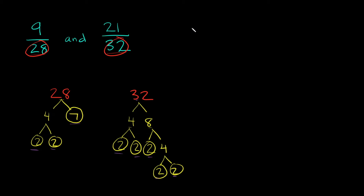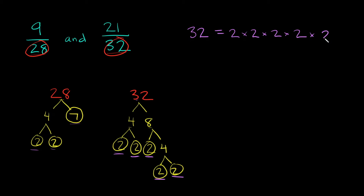So 32 is equal to all its prime factors multiplied together. We have a bunch of 2's — how many? We have 1, 2, 3, 4, 5. So I'm going to multiply all those together: 2 times 2 times 2 times 2 times 2. Let me confirm we have 5: 1, 2, 3, 4, 5. Okay, so we're done with 32.